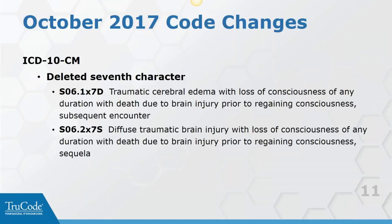And finally, I had to add this because I thought it was pretty funny. We had some deleted codes, only at the seventh character. In this case, S06.1X - that X identifies all codes in that S06.1 range. S06.1 with seventh character D for subsequent encounter has been deleted. If you look at the code: traumatic cerebral edema with loss of consciousness of any duration with death due to brain injury - subsequent encounter. And you can see the one below it is the same thing: sequela in somebody who has suffered brain injury and death. I don't know how that could be.